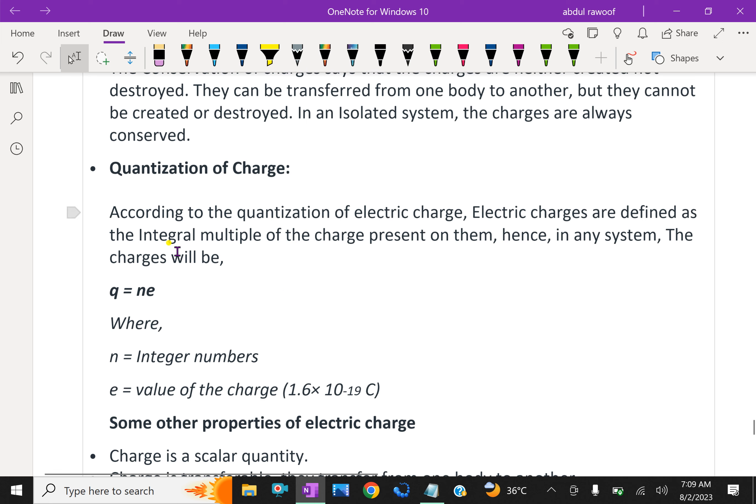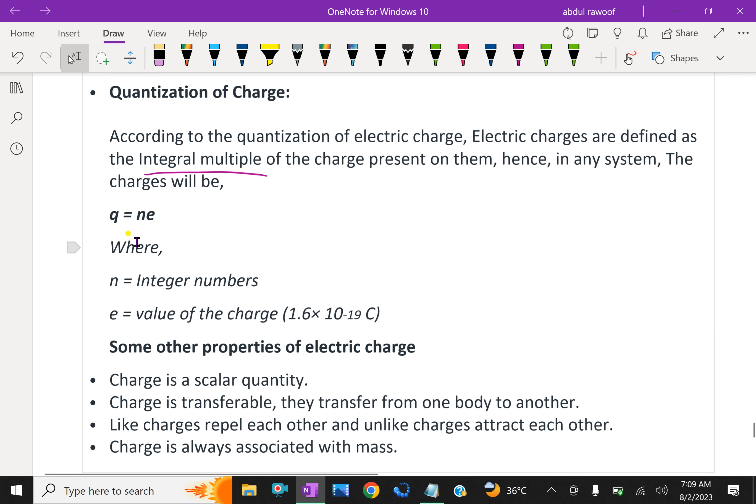Quantization of charge. According to the quantization of electric charge, electric charges are defined as the integral multiple of charge present on them. Hence, in any system, the charges will be q = ne, where n is the integer numbers, e is value of the charge, that is 1.6 × 10^-19. How many number of such electrons is there? That much multiplication gives the total charge.